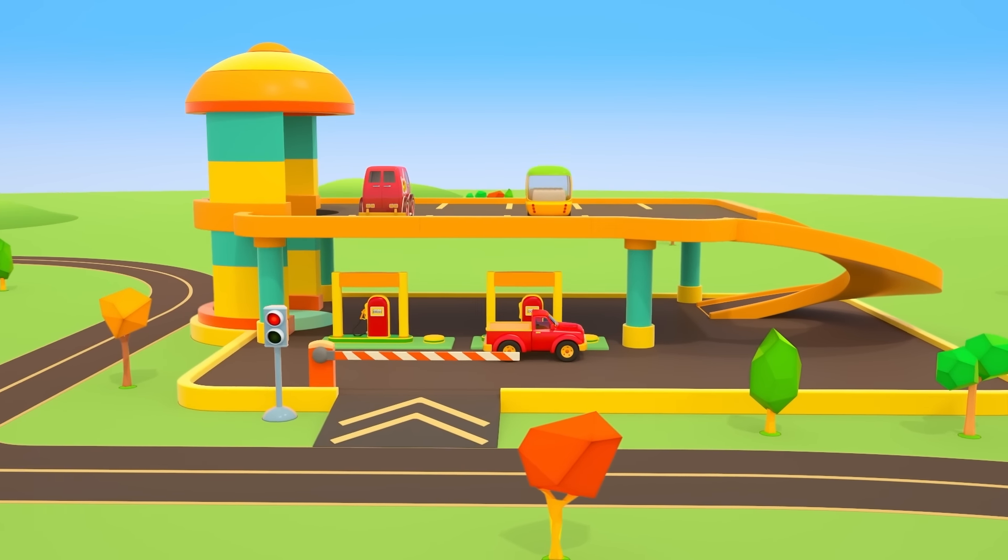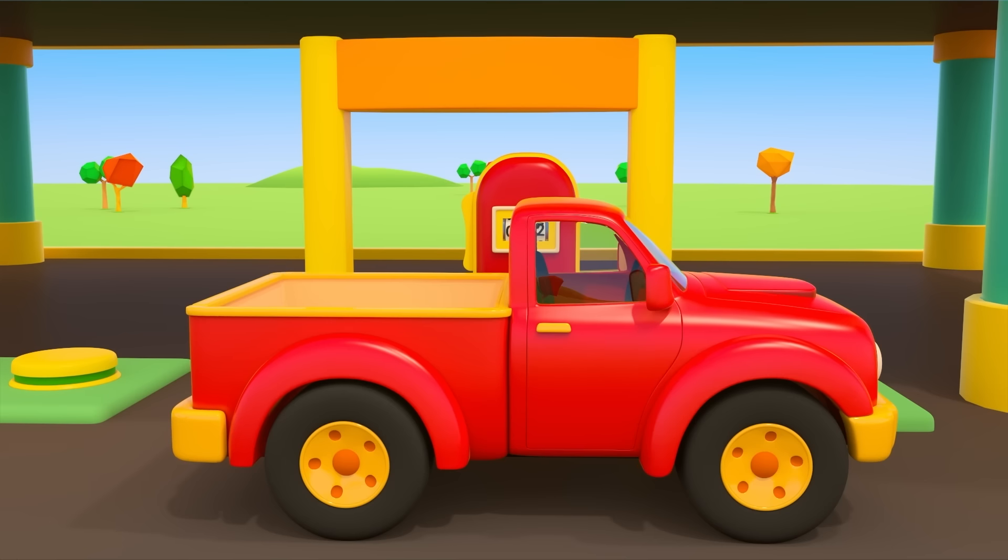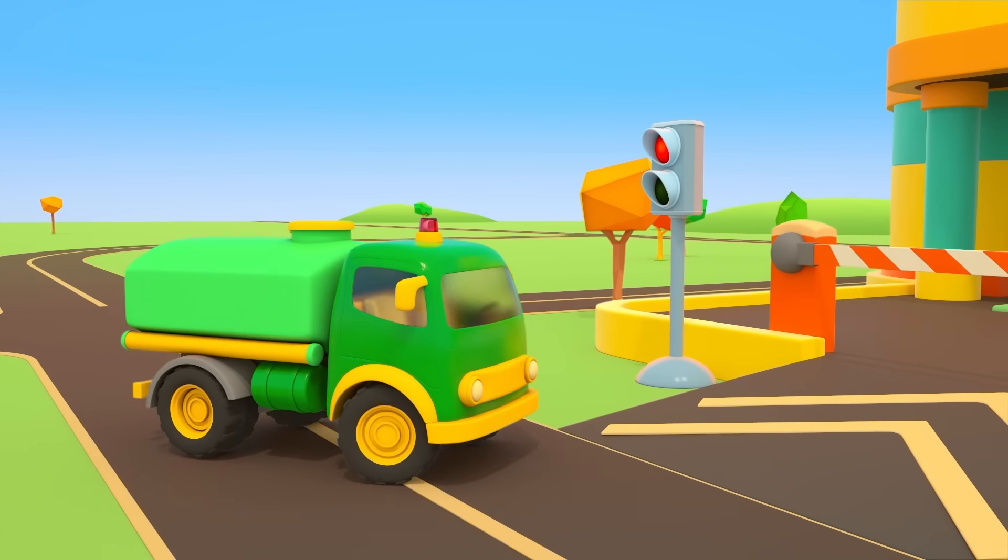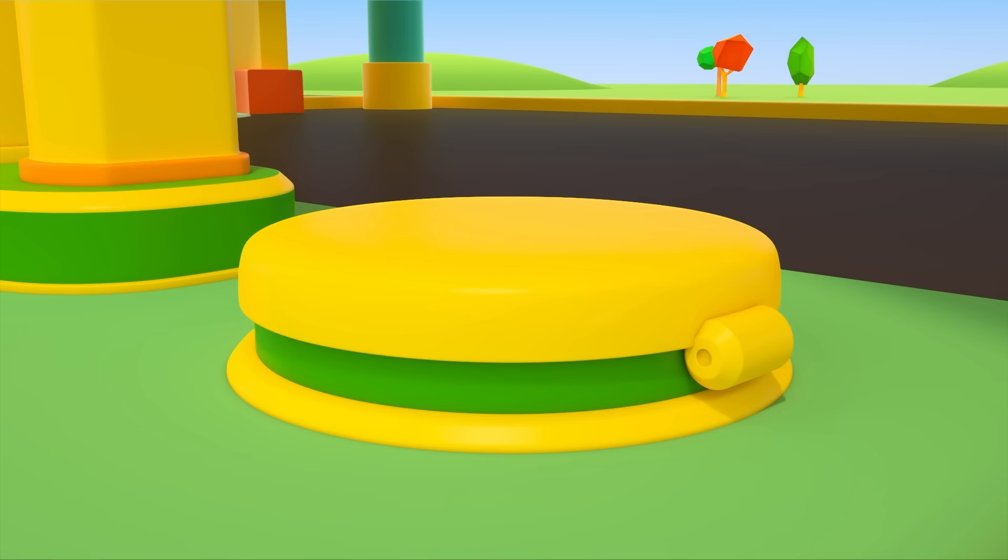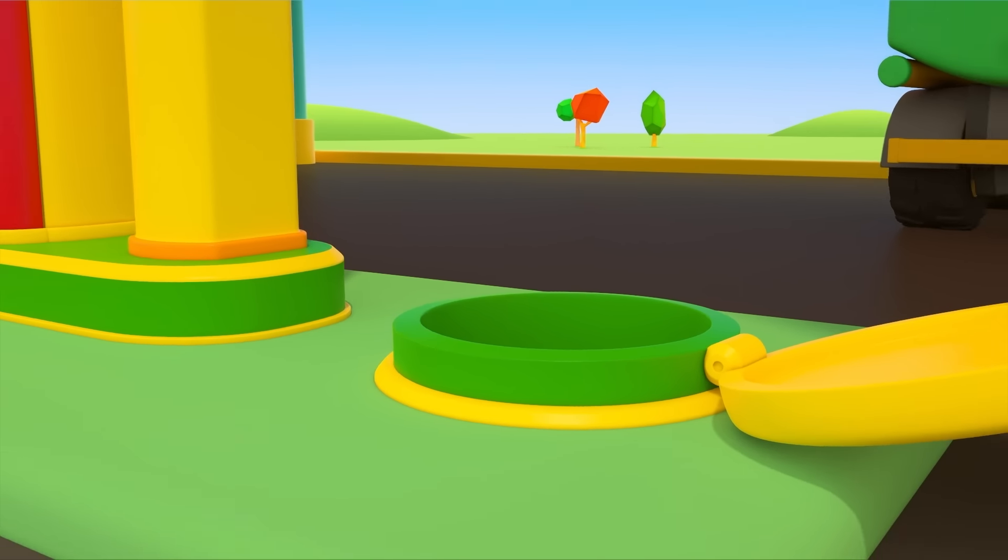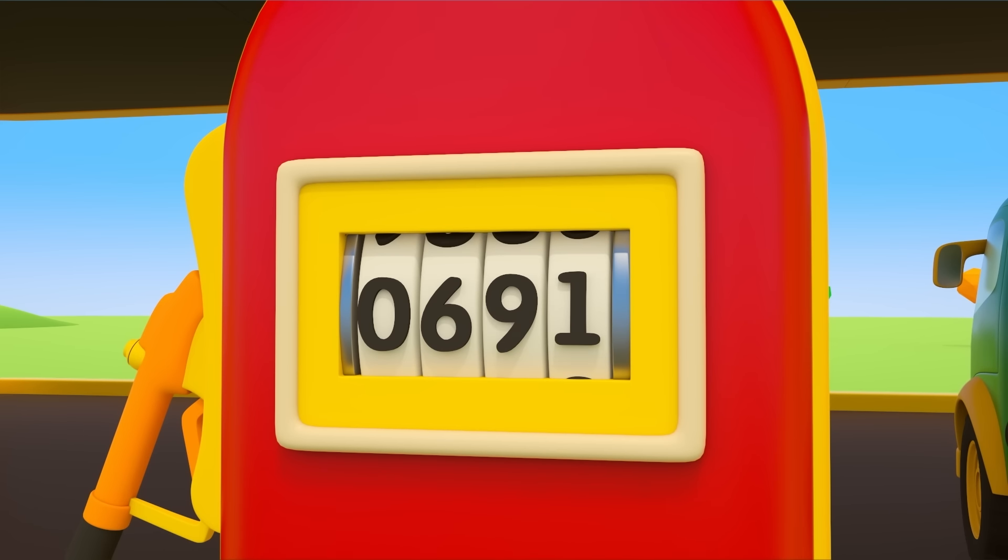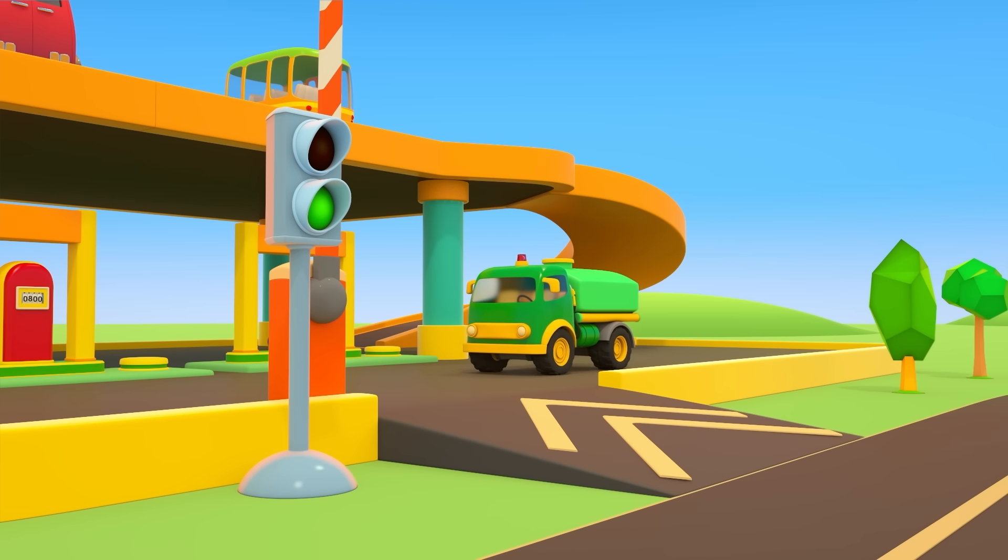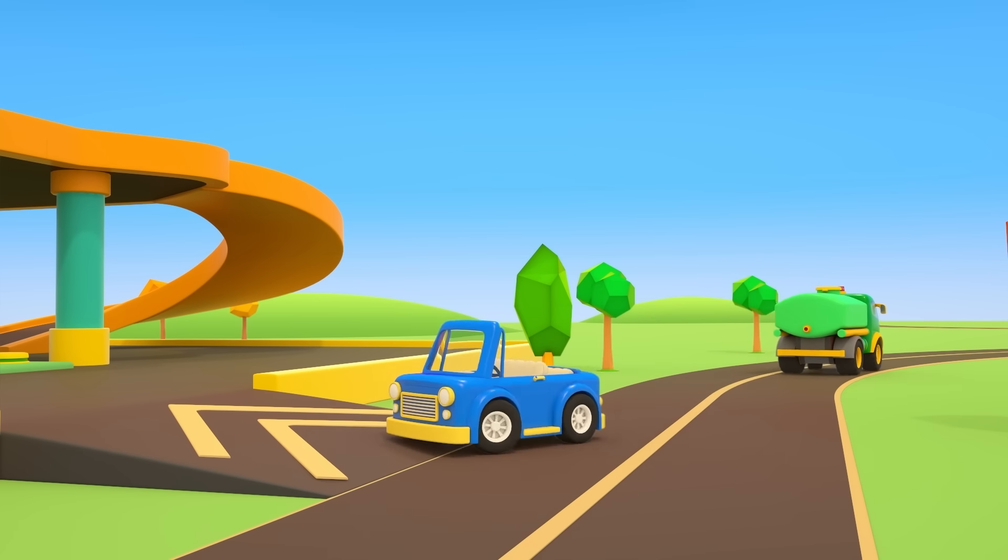This is a parking garage with a gas station. A pickup truck has come for fuel. And here comes the green fuel truck. It will fill up an underground tank where fuel is stored. These are the tanks that hold the fuel that cars fill up with at gas stations. Great, now cars can refuel the rest of the day. Convertible, come top up your tank.